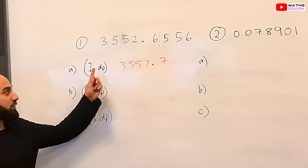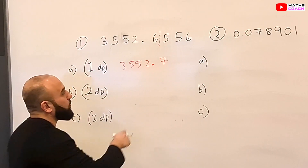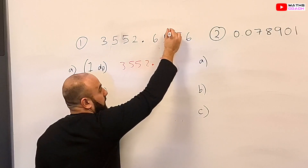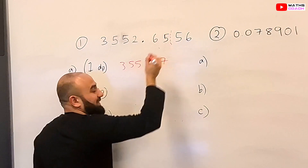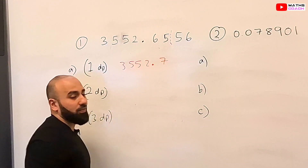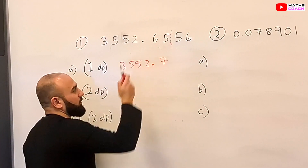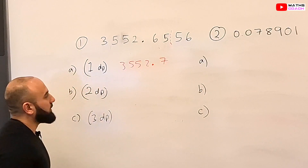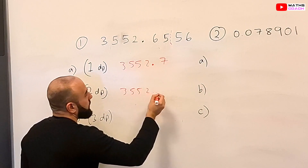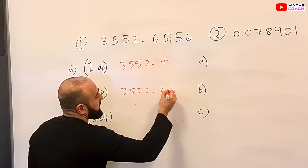Let's round the same number to two decimal places. Instead of drawing a line after the first digit, we draw a line after the second digit and look at the number next to the 5. Because it's 5 and above, we'll increase the 5 to a 6. So our number is 3552.66.